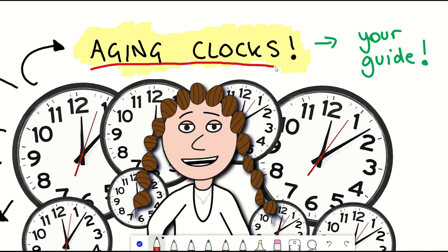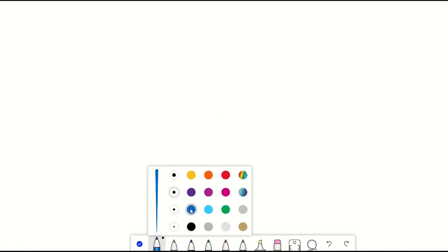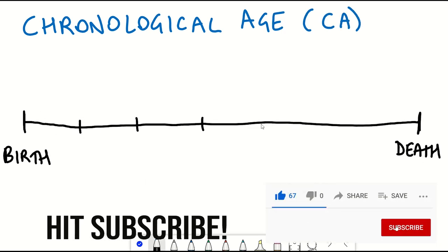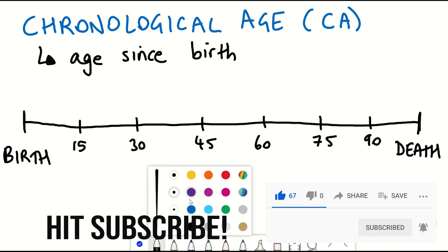Before we look at some aging clocks there are two key terms that you need to understand. The first one is super easy and that's chronological age or CA as I may refer to from now on, and this is your age since birth.